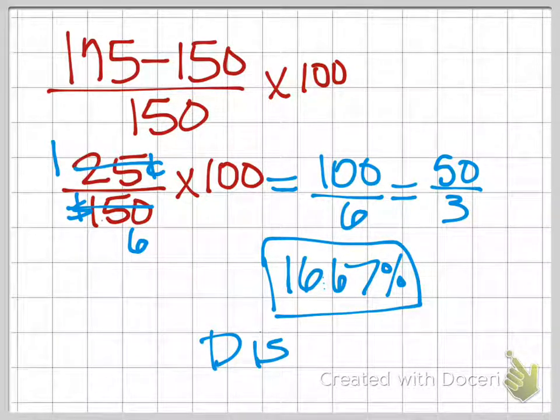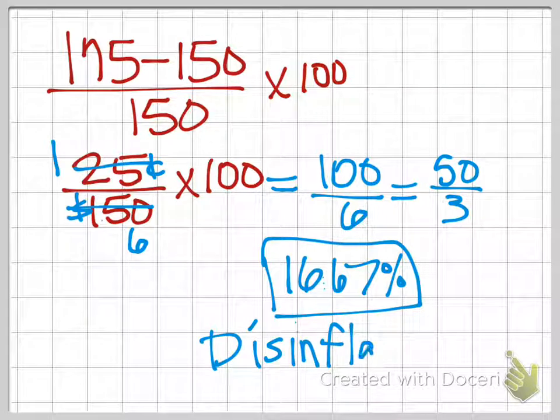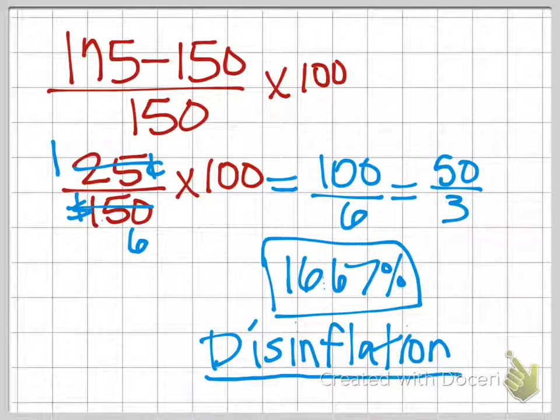And we'll talk about this again more in—and I messed up my spelling there. Let's see if I can fix this. This is called disinflation. So we still had an increase in price. So we still had inflation. But our rate was lower than the rate of inflation the previous year.